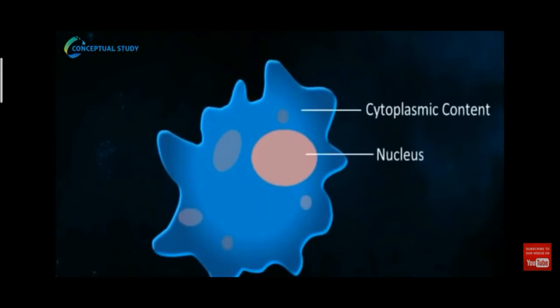Amoeba is a unicellular organism which contains a nucleus surrounded by cytoplasm. Amoeba can change its shape — that is the specialty of amoeba. It begins the process of reproduction by the division of its nucleus. The amoeba becomes elongated along with its nucleus.